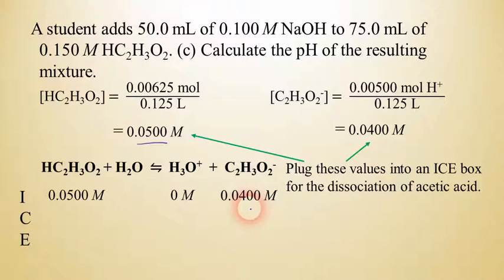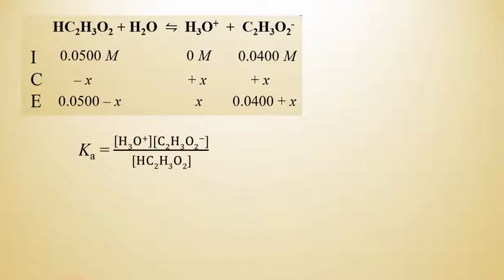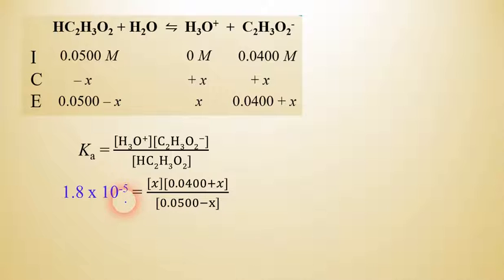We know that the product side has to go up because you can't go less than zero. So this is going to be a minus x, and the right side will be plus x and plus x. So for our equilibrium values, we're going to have 0.05 minus x, x, and 0.04 plus x. Just like we learned in the weak acid lesson previously, we're going to take all of these values and plug them into the Ka expression for this acid. And so we know that it's going to look like this. And so we just plug those values in. We can look up that the Ka for acetic acid is 1.8 times 10 to the negative fifth. That's a number that's readily available.